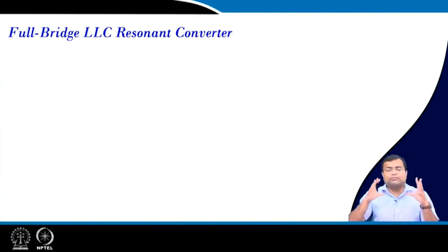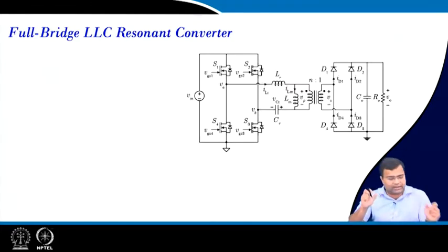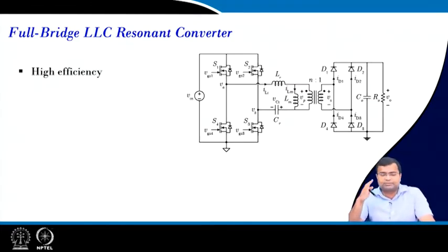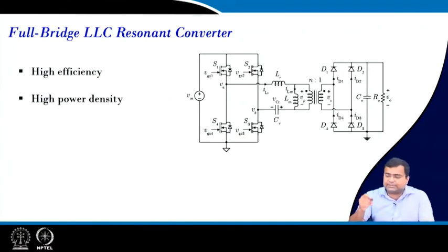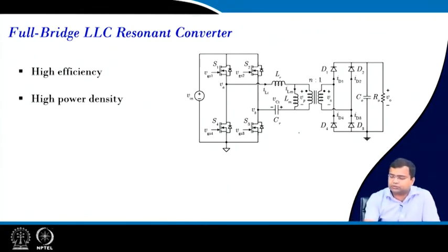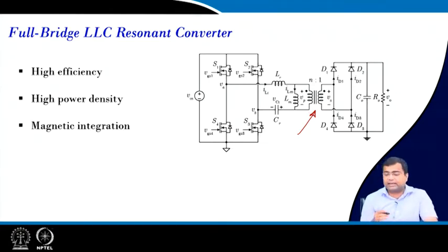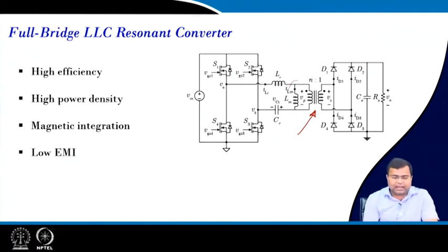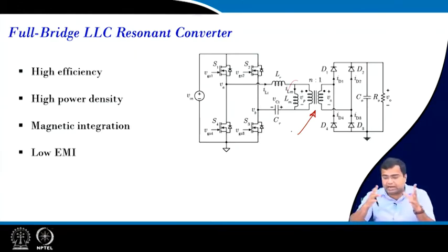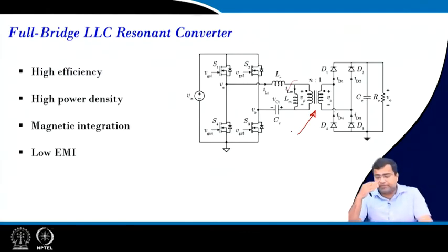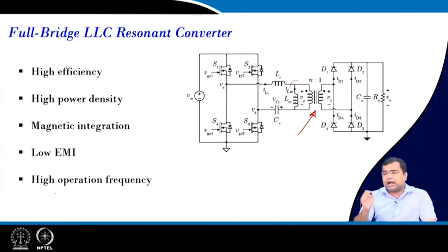In this course we will also cover the full-bridge LLC converter. The LLC converter offers high efficiency and high power density because it uses a resonant circuit allowing operation at much higher frequencies to reduce magnetic size. Magnetic integration means the magnetizing inductance Lm can be part of the transformer. It also offers low EMI due to the resonating operation, unlike hard-switching converters, and enables higher switching frequencies.